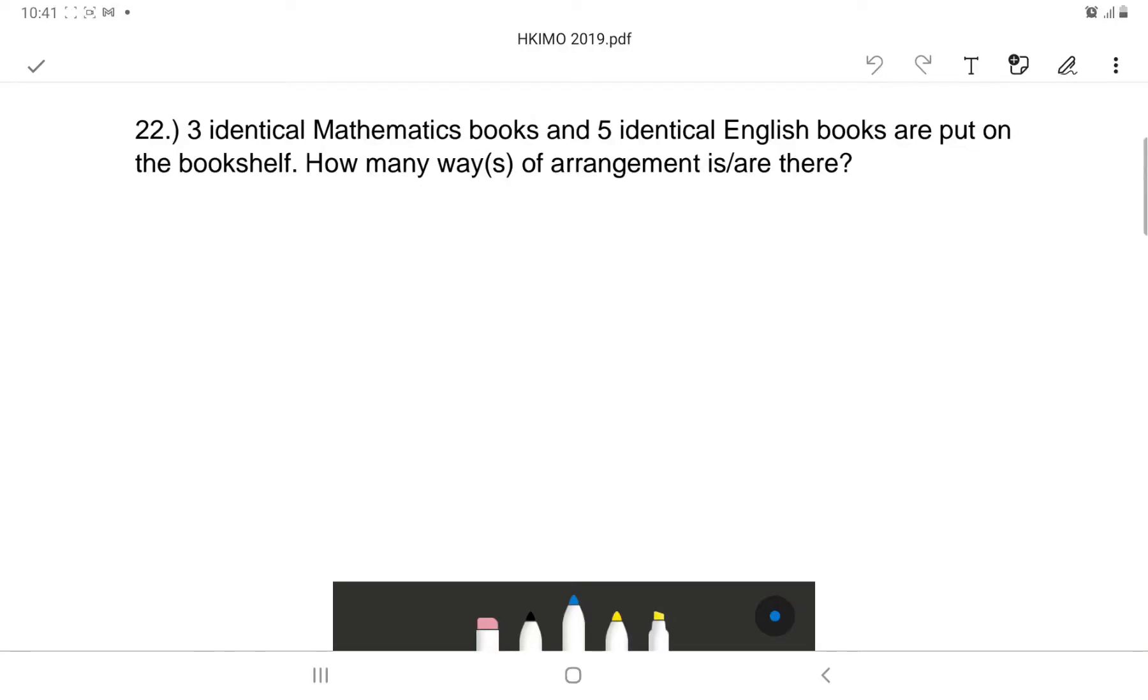Three identical mathematics books and five identical English books are put on the bookshelf. How many ways of arrangement are there? So in this case, it's a permutation problem. You have a total of objects...